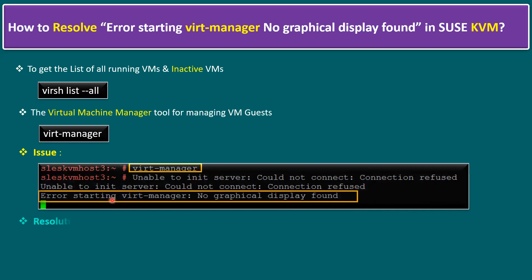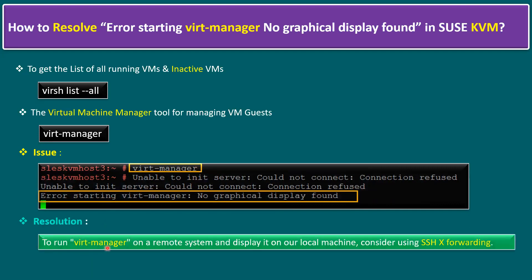To resolve this error, the solution is to run Virtual Machine Manager on the remote system and display it on our local machine by using SSH X11 forwarding. We have to enable SSH X11 forwarding to resolve this error message. I will show you how to enable it in the following steps.